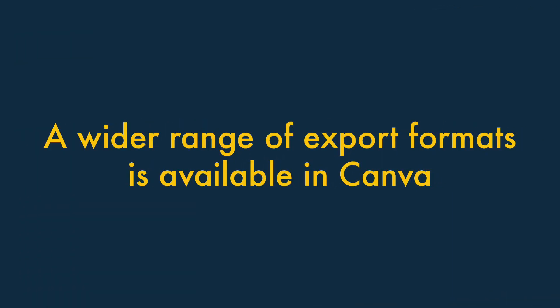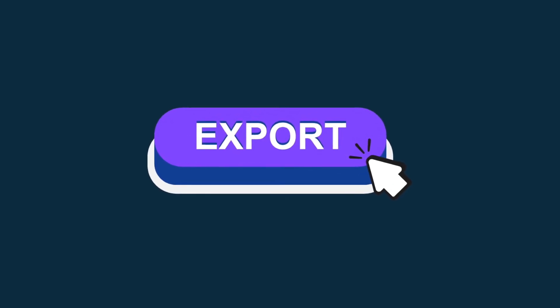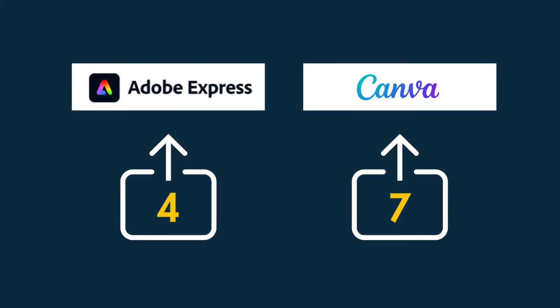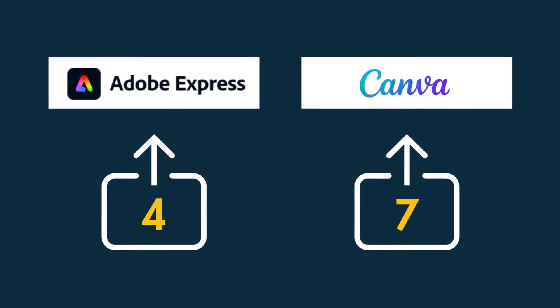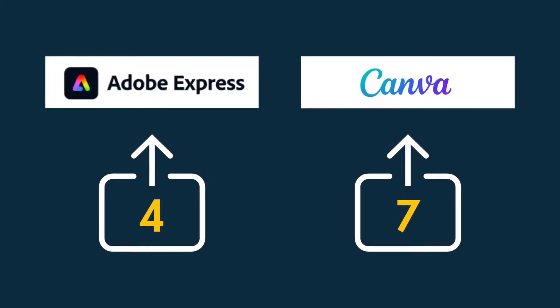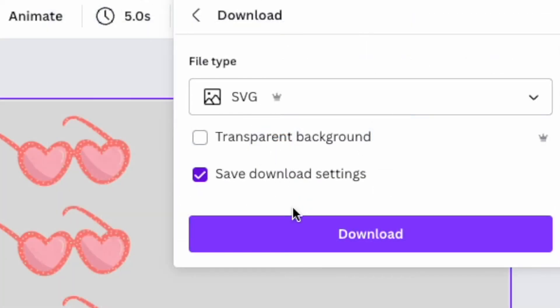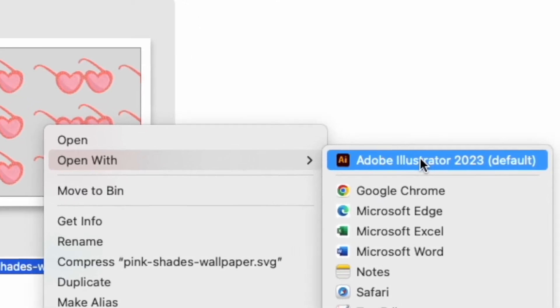A wider range of export formats is available in Canva. Canva gives you access to a wider range of output formats than Adobe Express. While Adobe Express limits you to exporting to just four file types, Canva caters for seven, including PowerPoint and SVG formats. This gives you more ways to use your visuals outside of the platform.